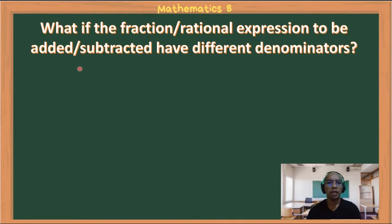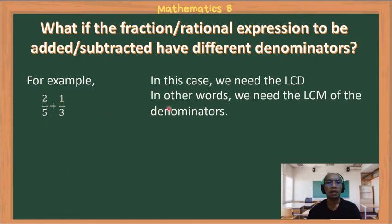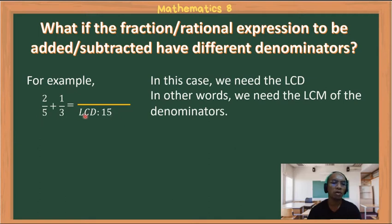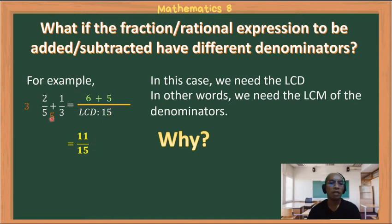When fractions have different denominators, such as 2/5 + 1/3, we need to find the LCD — the LCM of the denominators. Since 5 and 3 have no common factors, the LCD is 15. Divide 15 by each denominator: 15 ÷ 5 = 3, then multiply by the numerator: 3 × 2 = 6. Then 15 ÷ 3 = 5, multiply: 5 × 1 = 5. Adding the numerators: 6 + 5 = 11, giving 11/15.